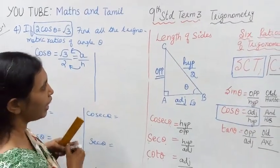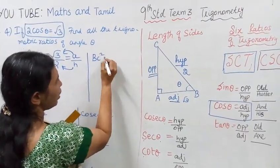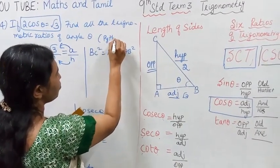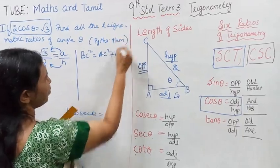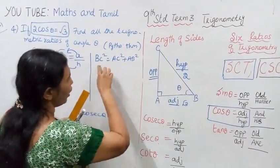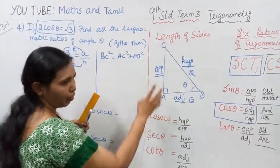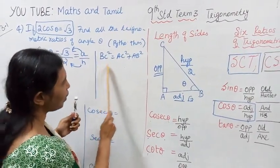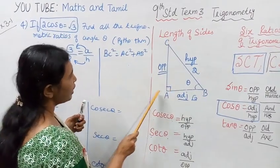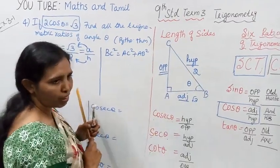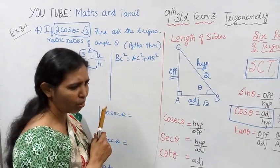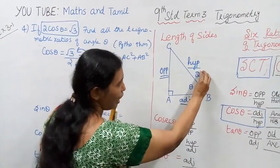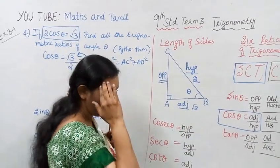Using Pythagoras theorem: BC squared equal to AC squared plus AB squared. The square of the hypotenuse is equal to the sum of the squares of the other two sides. So BC squared equals AC squared plus AB squared.